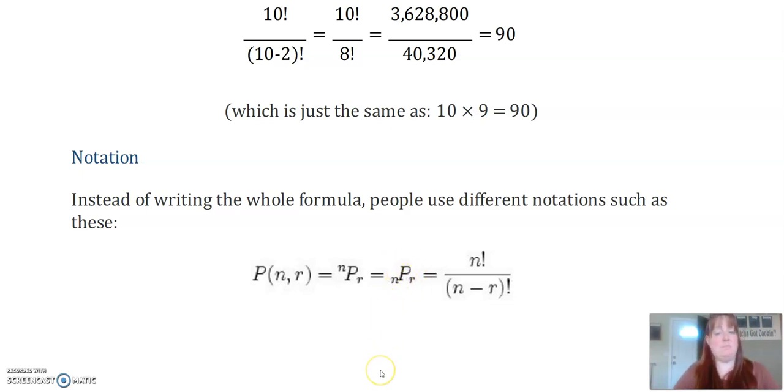So if this said, you know, if you saw something that was like 15 P three, that means I have 15 objects and I want to figure out how many permutations there are if I pick three of them. And so then you could just plug that into the formula. This would be 15 factorial over 15 minus three factorial, which is 12 factorial.